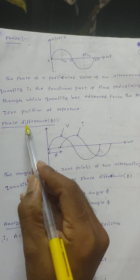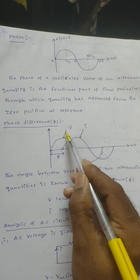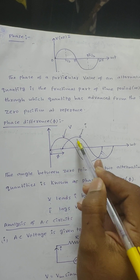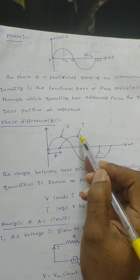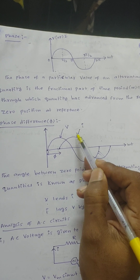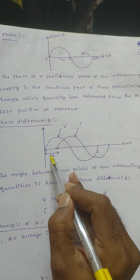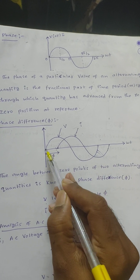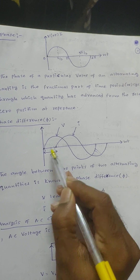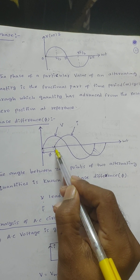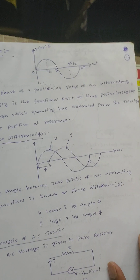Phase difference: here I can consider two phases — one is voltage phase and another one is current phase. The angle difference between two phases or two alternating quantities is known as phase difference.